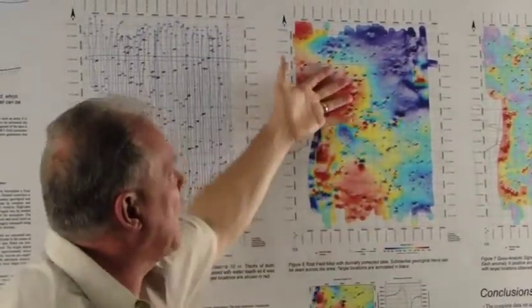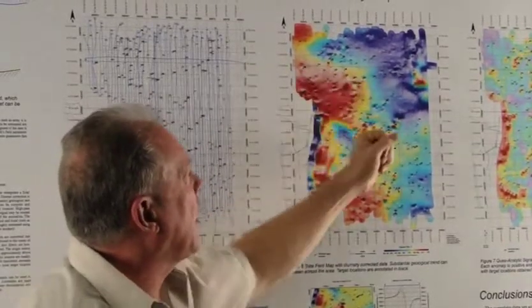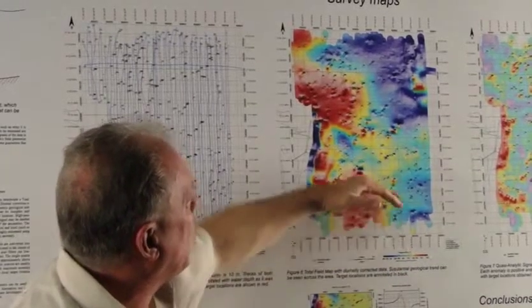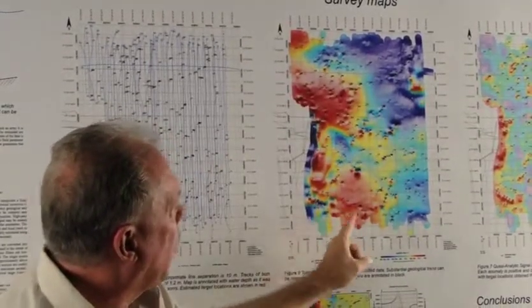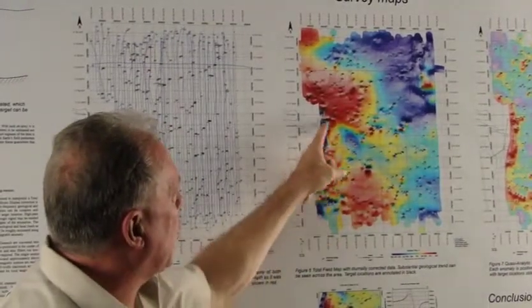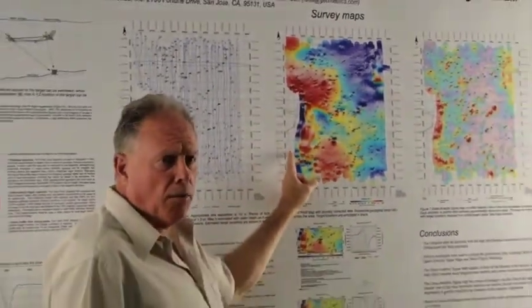We do see an area of high magnetics and low magnetics, and we see the individual target anomalies located on top of that geology. We also see a large anomaly associated with a wharf area off to the left here.